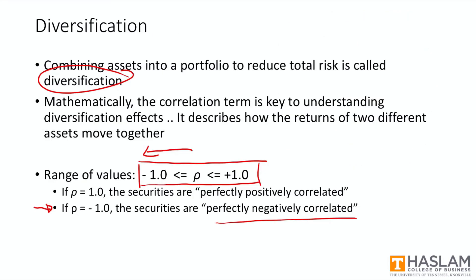In the case of negative correlation, you'll see that losses in one asset are often offset by gains in another. Now in the extreme case of a correlation of minus one, we would say the assets are perfectly negatively correlated. If that's the case, then you could arrange the portfolio in a manner to achieve a zero variance, or a risk-free portfolio.